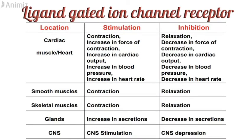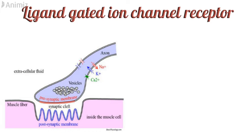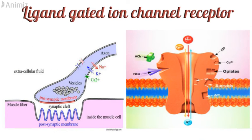These receptors are located at different places in the body, and movement of ions either stimulates or inhibits these organs, as listed in the table. For example, these receptors are present at the neuromuscular end plate, and when acetylcholine, which is the ligand, binds to the receptor, it opens the ion channel and leads to movement of ions intra- and extracellularly.